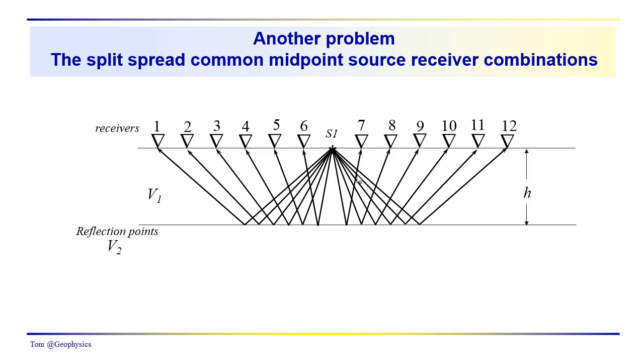So we've got a layer that's h thick, has a velocity v1, a velocity v2 in the underlying layer. And what we're going to do here is we're going to move the source like we did with the off-end source-receiver combinations. We're just going to move the source a distance equal to the geophone separation. And we'll just go from left to right here. And then we're going to number our reflection points just by the receiver number. So we have reflection points 1, 2, 3, 4, through 12.